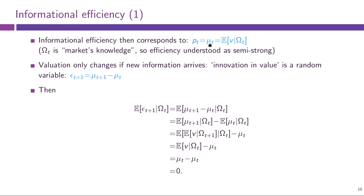Now that we know what the market valuation of an asset is, we can talk about what informational efficiency of the price means. Informational efficiency means that the price P_t should be equal to the market valuation μ_t, where μ_t is the conditional expectation of the true fundamental value V given the market's public knowledge Ω_t. Here Ω_t is the public information and does not incorporate agents' private information, so this equality is understood in the semi-strong sense — if this equality holds, price is semi-strong efficient.